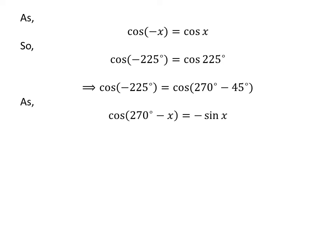As we know, the trigonometry identity cosine of 270 degrees minus x is equal to minus sine of x. The video explaining how to derive this identity is appearing in the upper right corner, and the URL address of the video has been mentioned in the description section.